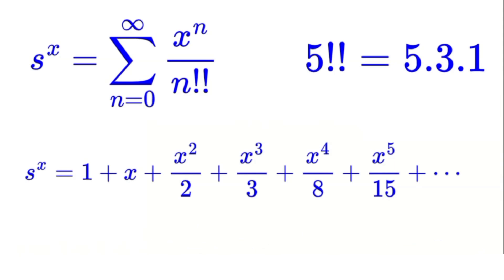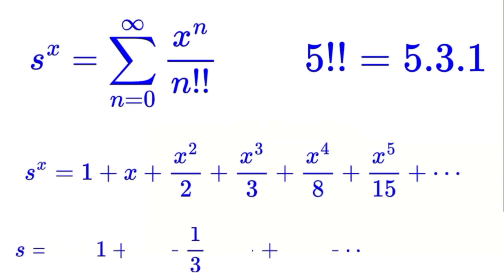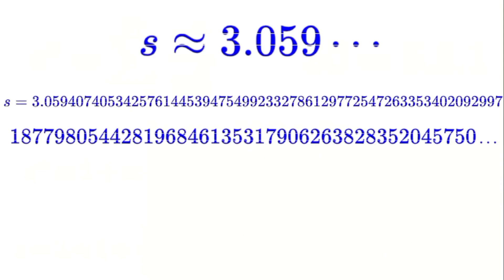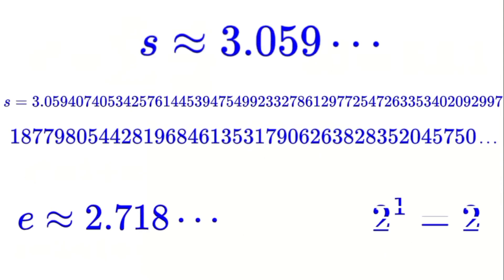Let's compute the value of S to the power of 1 using this series. If we plug in X equals 1, we get 1 plus 1 plus 1 over 2 plus 1 over 3 plus 1 over 8 plus 1 over 15, and so on. If we add these up, we get approximately 3.059. Now let's compare this to e to the power of 1, which is about 2.718, and 2 to the power of 1, which is just 2.